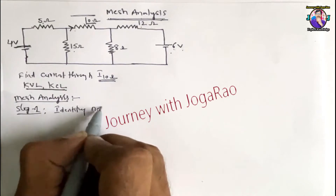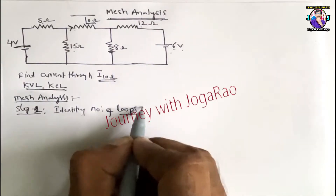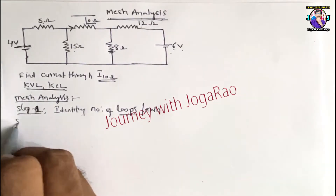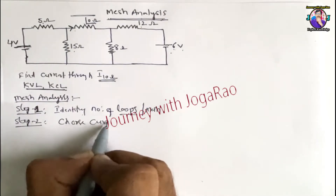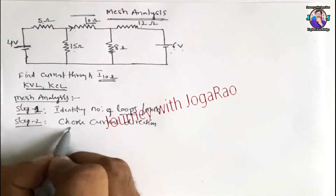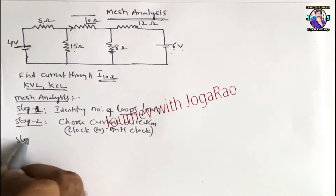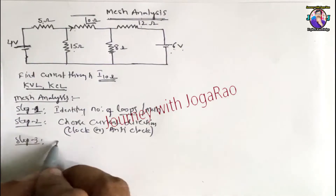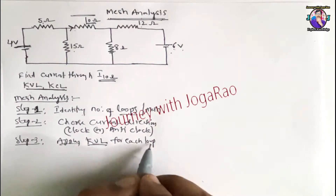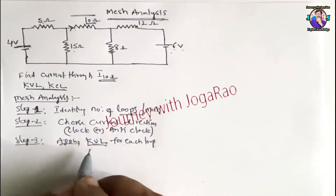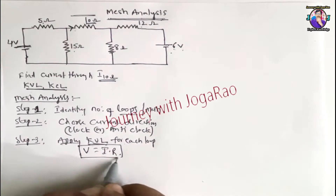In this video I will explain mesh analysis loops. Step 1: Identify the number of loops. Step 2: Choose current direction — either clockwise or anti-clockwise. Step 3 — this is the important step — apply KVL for each loop in the form V = IR, and apply voltage equations for each loop.